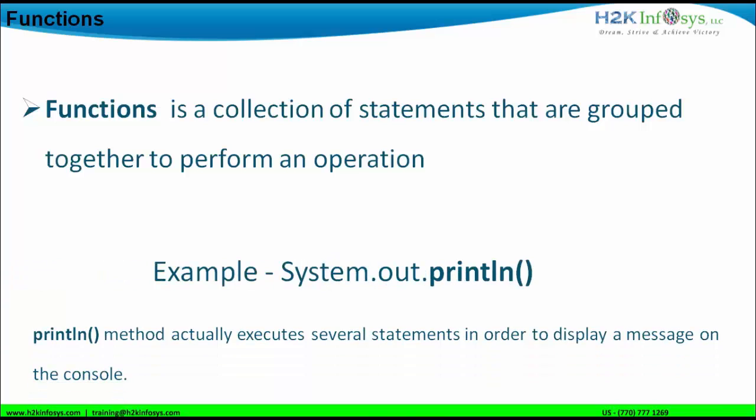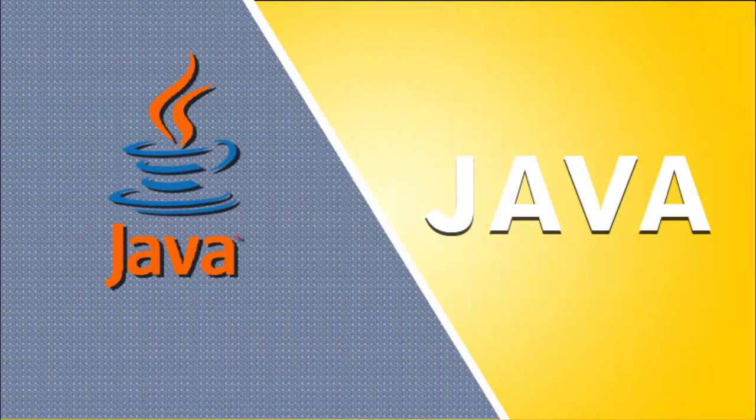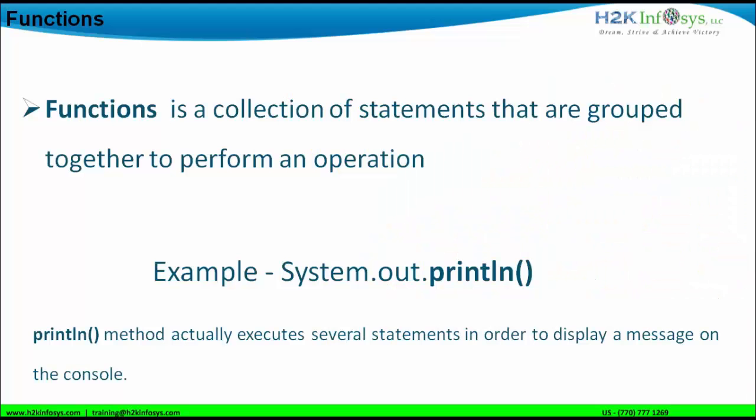A typical example is the println function, also called a method — functions and methods are interchangeable terms. The println command executes a lot of code in order to display a message or result on the console of Eclipse or the Java environment. The println function is an inbuilt method of the PrintStream class and is also part of the System class. It can be used to execute a set of codes and display the result in the Eclipse console.